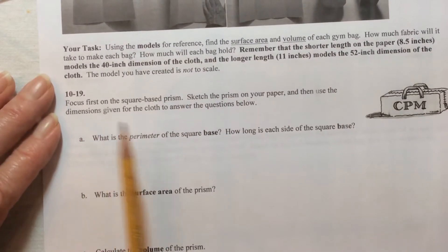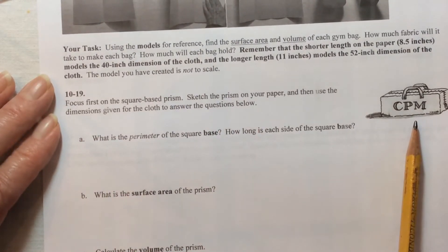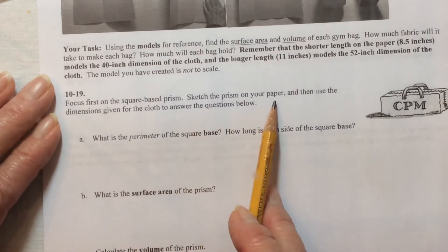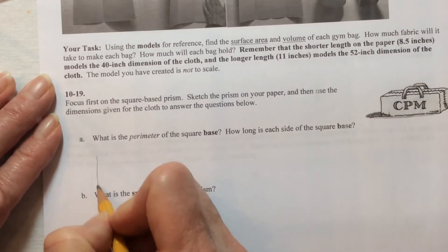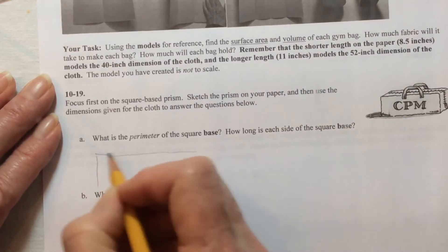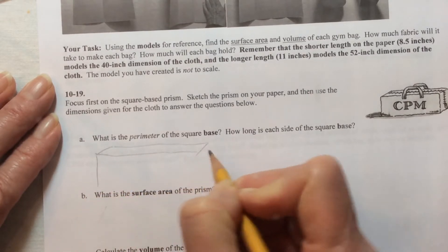So we're focusing on the square-shaped bag first, or the rectangular prism-shaped bag, and we need to sketch that prism on the paper. I'll do that first. I'm going to follow that as the model. Here is a rectangular prism.